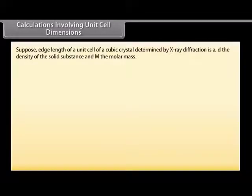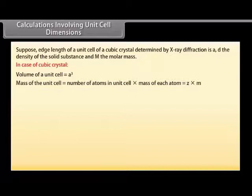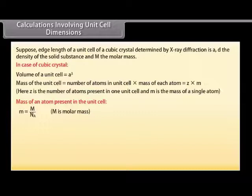Calculations involving unit cell dimensions. Suppose the edge length of a unit cell of a cubic crystal determined by X-ray diffraction is A, D the density of the solid substance, and M the molar mass. In the case of a cubic crystal, the volume of a unit cell is equal to A³. The mass of the unit cell equals the number of atoms in the unit cell multiplied by the mass of each atom, which is Z × M. Here, Z is the number of atoms in one unit cell and M is the mass of a single atom, equal to M/Nₐ, where M is molar mass.